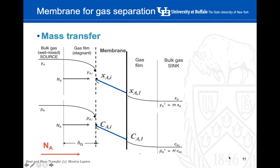We're going to do the same in the case of the membrane. In this particular case, for two gas phases, we still have the source and the sink. The only difference is that now we have in between, at the interface, a very thin layer of material called the membrane. But the approach is very similar — there is transport of element A from the source to the sink.